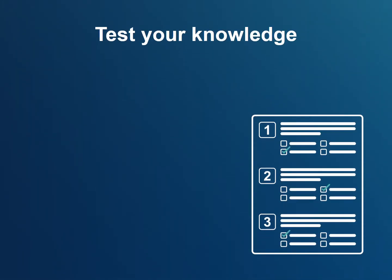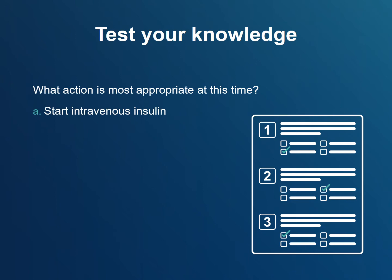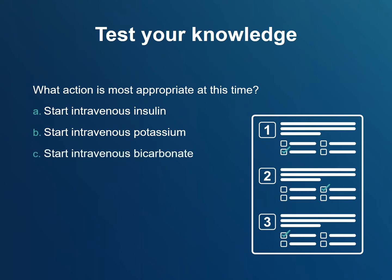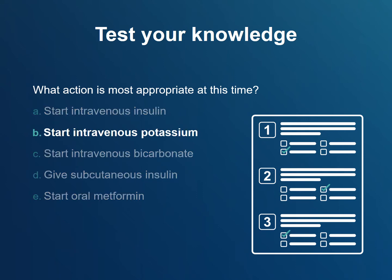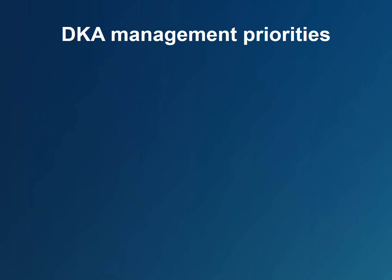Back to the case. You have just diagnosed Sam with DKA. Blood tests have been obtained and reviewed, monitors have been placed, and intravenous access has been obtained. What is the most appropriate action at this time? A. Start intravenous insulin. B. Start intravenous potassium. C. Start intravenous bicarbonate. D. Give subcutaneous insulin. E. Start oral metformin. The answer is B: start intravenous potassium. There are many considerations when treating DKA, all of them important, but each needs to be addressed at the proper time during a patient's clinical course.